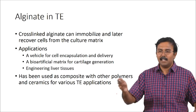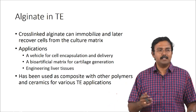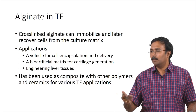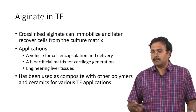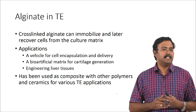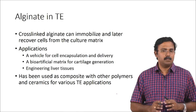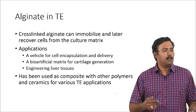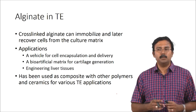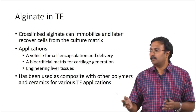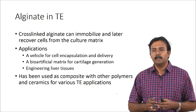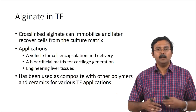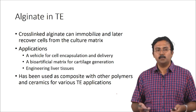You can always go back and refer to literature to figure out how exactly people have used this. Obviously, most of these would not just be taking alginate and using it — there will be some level of modification and other polymers being blended. As I said, it is commonly used as a composite with other polymers and also with ceramics for tissue engineering applications. Most of the polymers will always be tried blended with ceramics when they want to use it for bone tissue engineering, because the polymers themselves will not have the desired bioactivity and mechanical property.